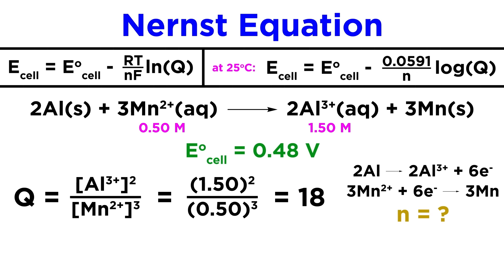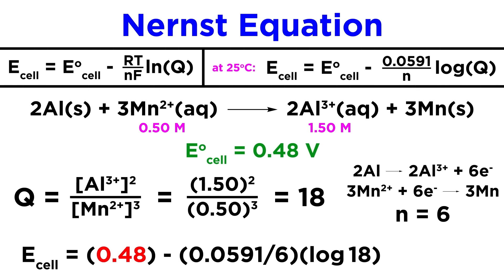Then we need the moles of electrons. The half reactions involve a transfer of 6 electrons, so N will be 6. So we plug in the standard cell potential, the moles of electrons, and the reaction quotient, and we get 0.47 volts as our answer, just a hair less than the standard cell potential, which makes sense given that we have a slight excess of one of the products.